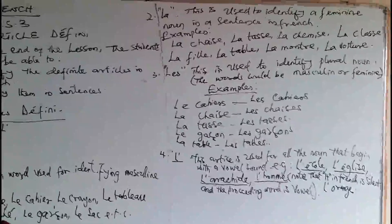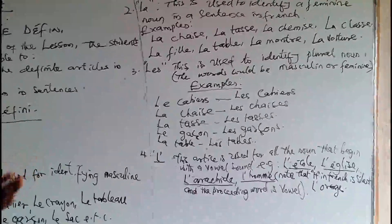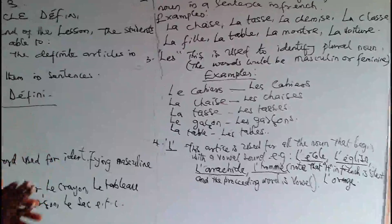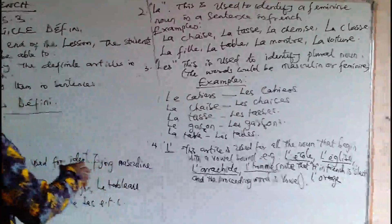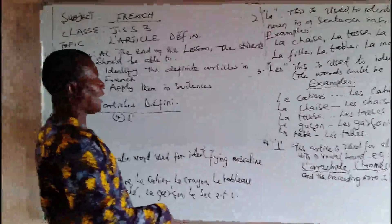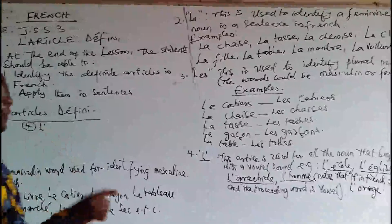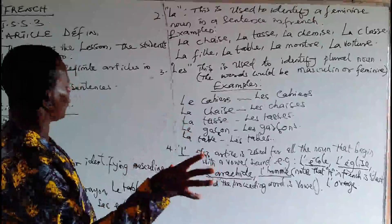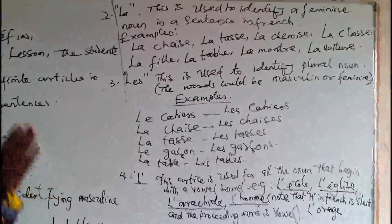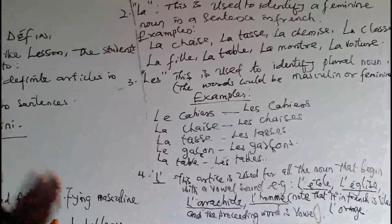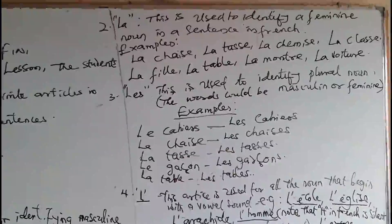Now we go to number three. Number three is special in the sense that it combines all the masculine and feminine words together — that is to say, when they are in plural forms. «Les» is the plural form of both «le» and «la». Le and la are singular, used to identify singular nouns only. But «les» is used to identify plural nouns, whether they are beginning with a vowel sound or a consonant.